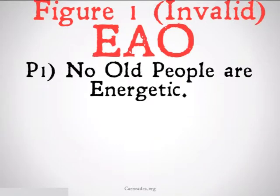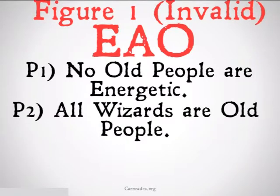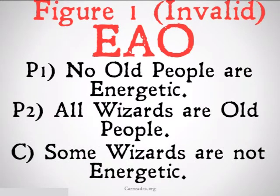EAO invalid: no old people are energetic, all wizards are old people, therefore some wizards are not energetic. The only thing that needs to exist is wizards, which in fact do not exist, so it is going to be invalid.